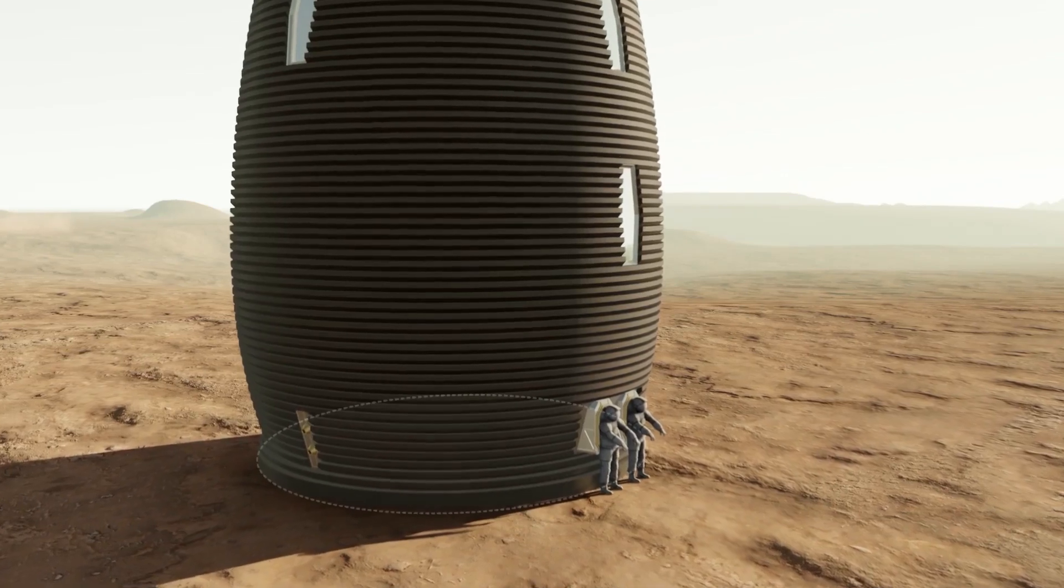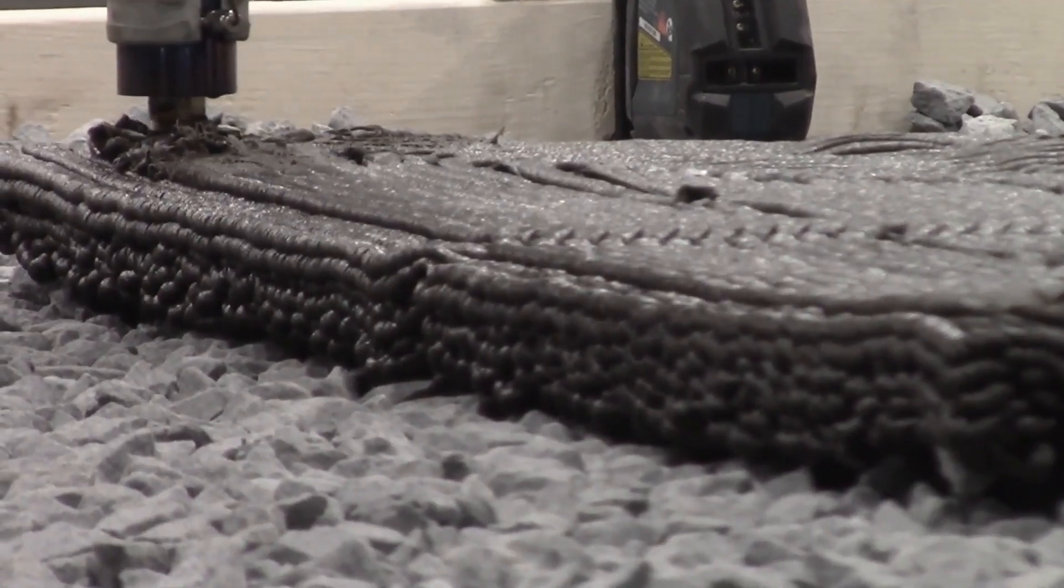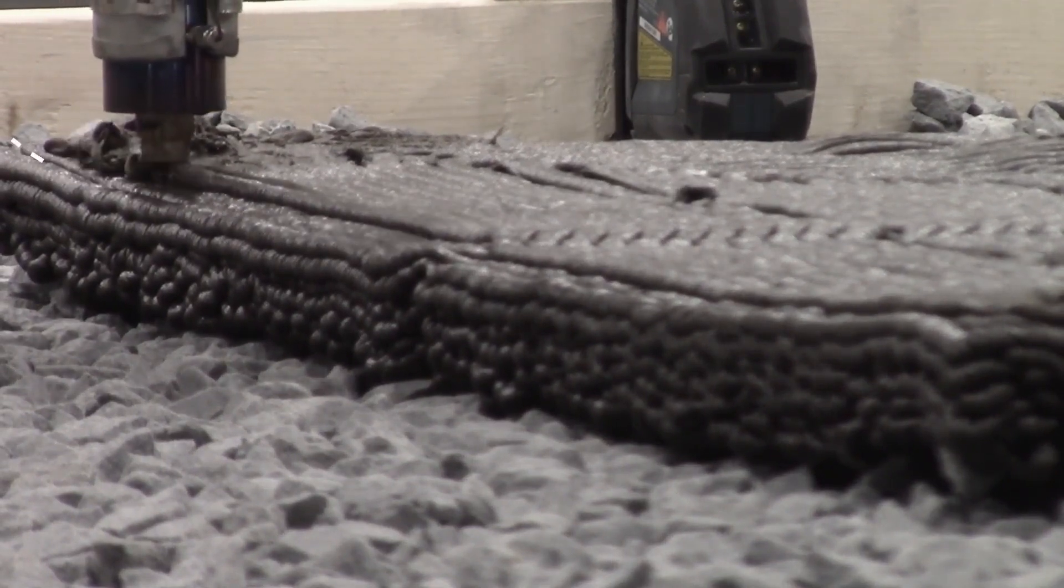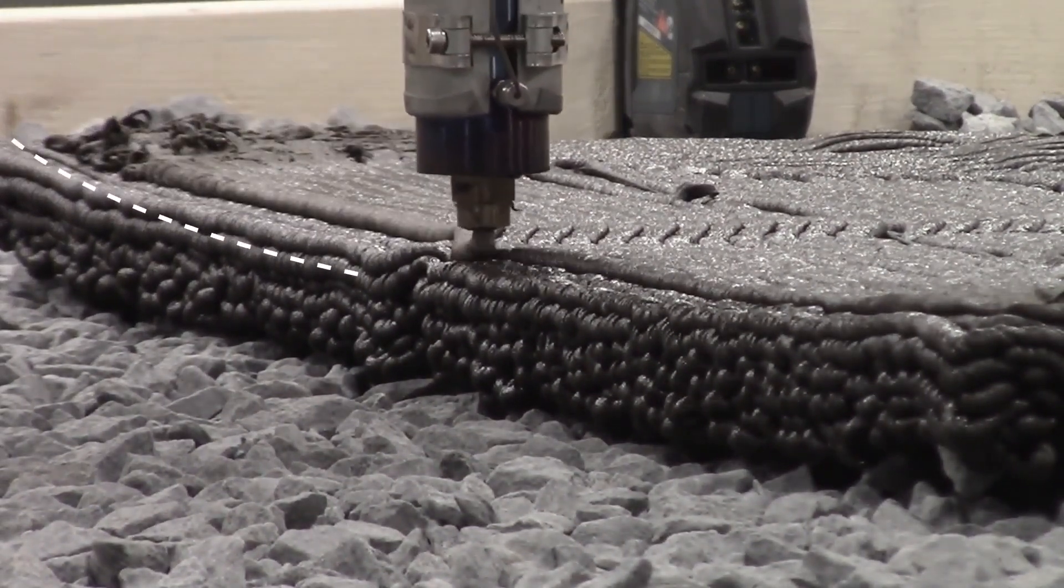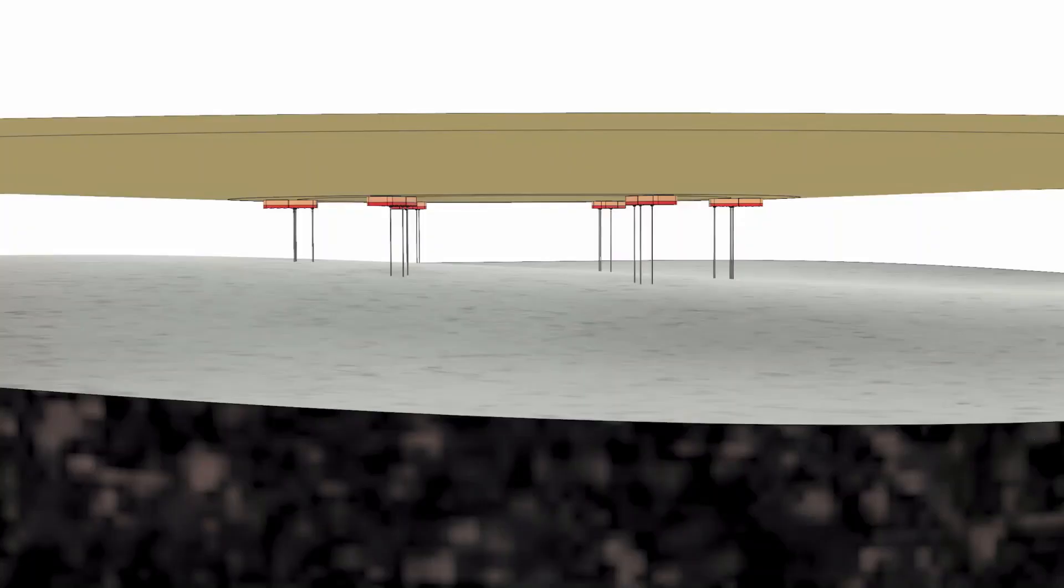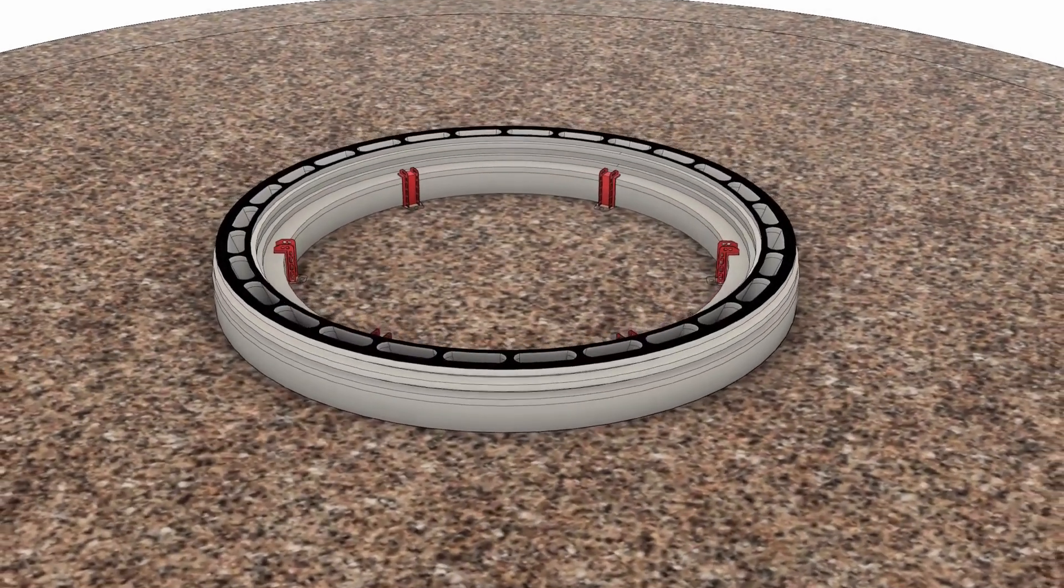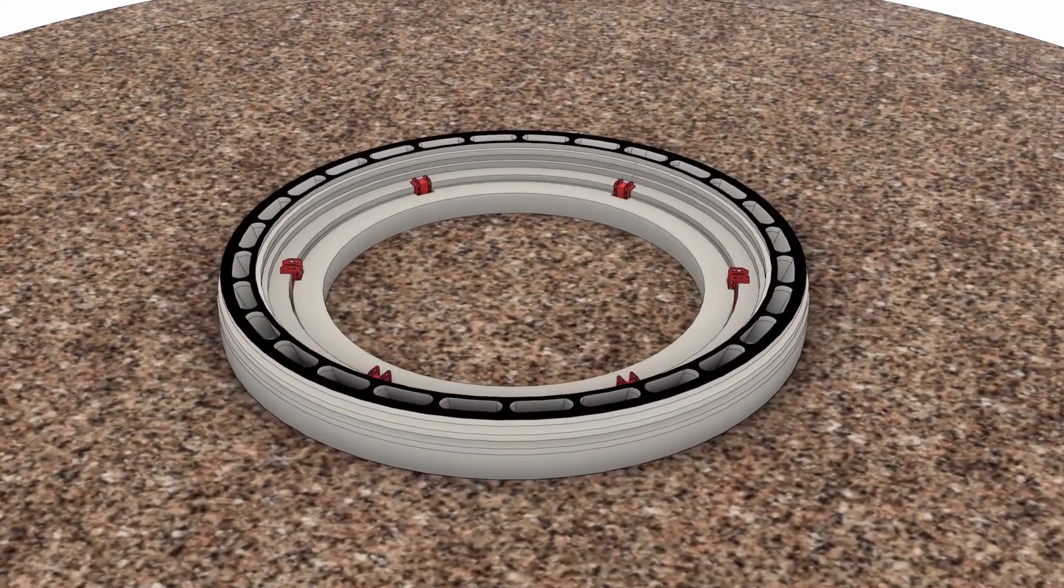We reaffirmed the importance of a robust foundation. Thermoplastics are extruded as hot liquids, which contract as they cool, causing flat, slender objects to warp into concave shapes. In order to keep warping to a minimum, Marsha's foundation will be printed in concentric rings beginning from the outside.